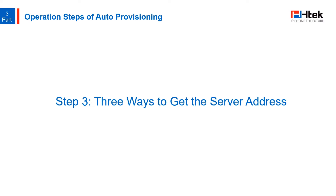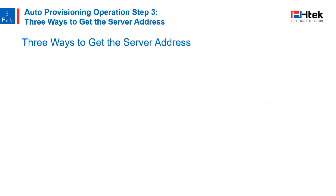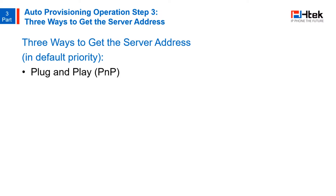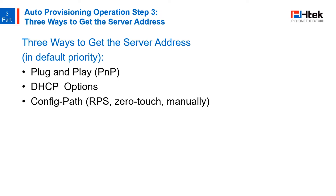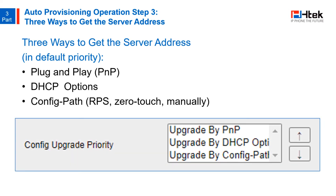Now your files are ready and the provision server is ready. The next step is to get the server address. There are three different ways to do it. By default, the priority of the three ways is: plug and play, also known as PMP, over DHCP options, over config path — which includes RPS, zero-touch, and manually. In the phone settings, you can adjust the priority to your desire. Now let's take a look at the operation of each of these ways.